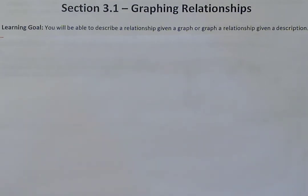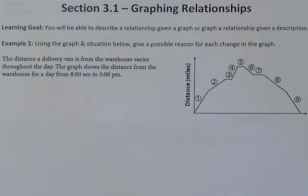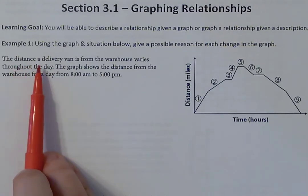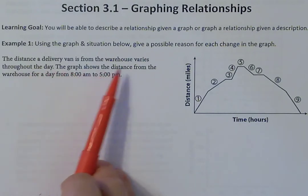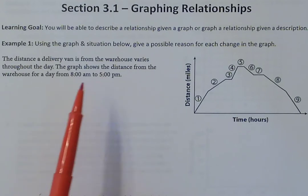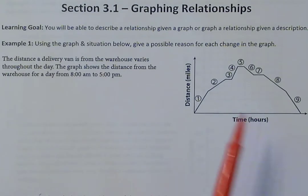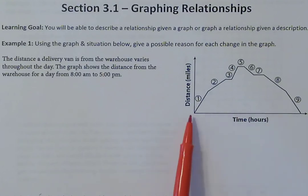Example one is going to ask us to use the graph and situation below and give a possible reason for each change in the graph. The situation is: the distance a delivery van is from the warehouse varies throughout the day. The graph shows the distance from the warehouse for a day from 8 a.m. to 5 p.m. As we move further to the right on the graph, that relates to how much time has occurred.